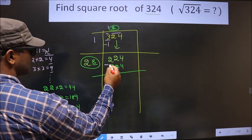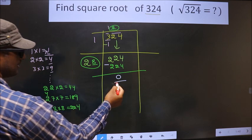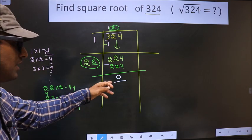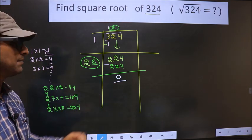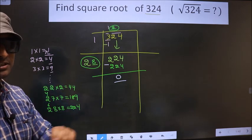Now you subtract these numbers, you get 0. So we got 0 here. That means 324 is a perfect square.